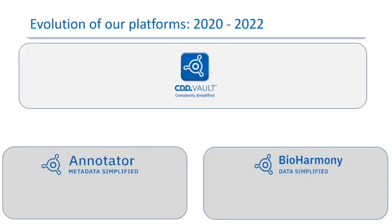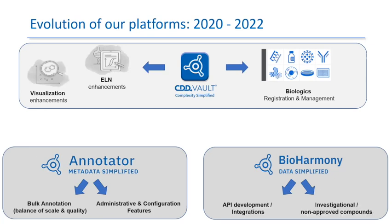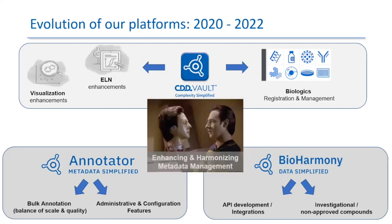In terms of platform evolution: CDD Vault is adding enhancements to current modules and new features like biologics; our Annotator is working on scale-up and administrative features; and BioHarmony has new API and data improvements. At the center of all of this is metadata. We're adding more ways to transfer information between our own systems and others — and that requires available data standards and ontologies, those universal connectors that work across all types of data we're exchanging.